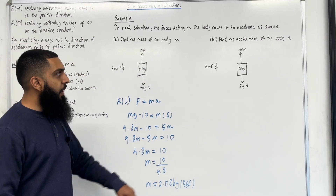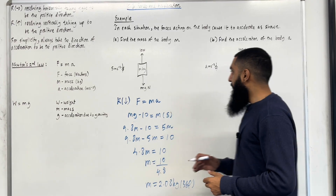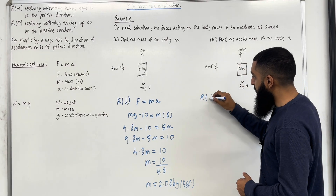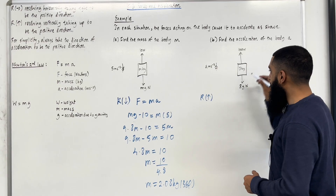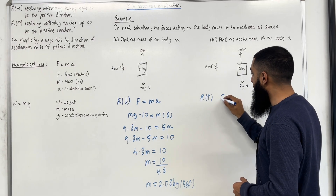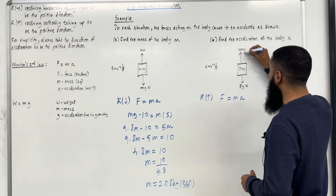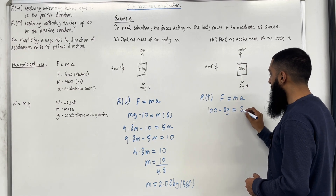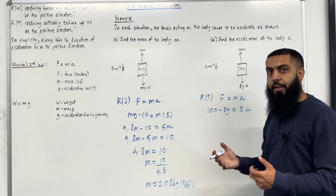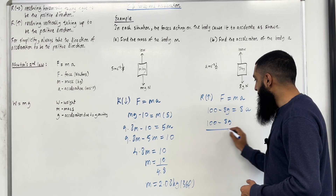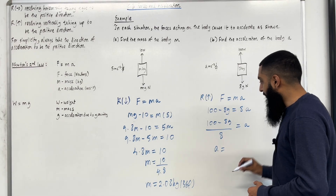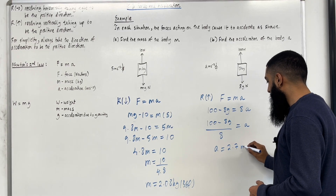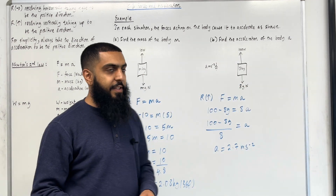Moving on to Part B: find the acceleration of the body A. The acceleration is acting in the vertical direction, so we resolve vertically in the direction of the acceleration, which is upwards — taking upwards to be the positive direction. Using Newton's Second Law F = MA, the resultant force F = 100 minus 8G. So 100 minus 8G equals mass 8 multiplied by acceleration A. Rearranging: A = (100 minus 8G) divided by 8. Substituting G = 9.8 gives A = 2.7 m/s². That completes the example.